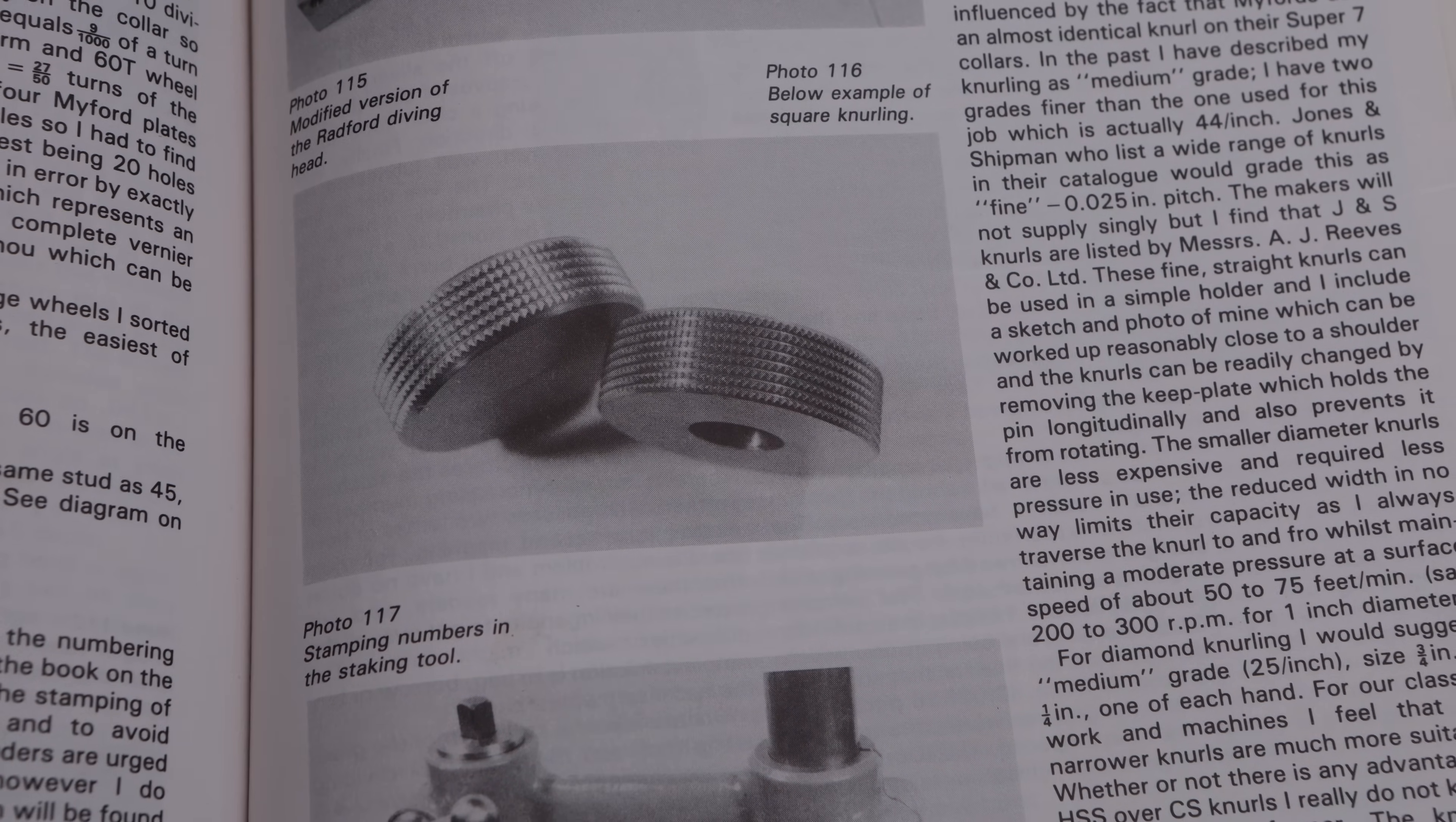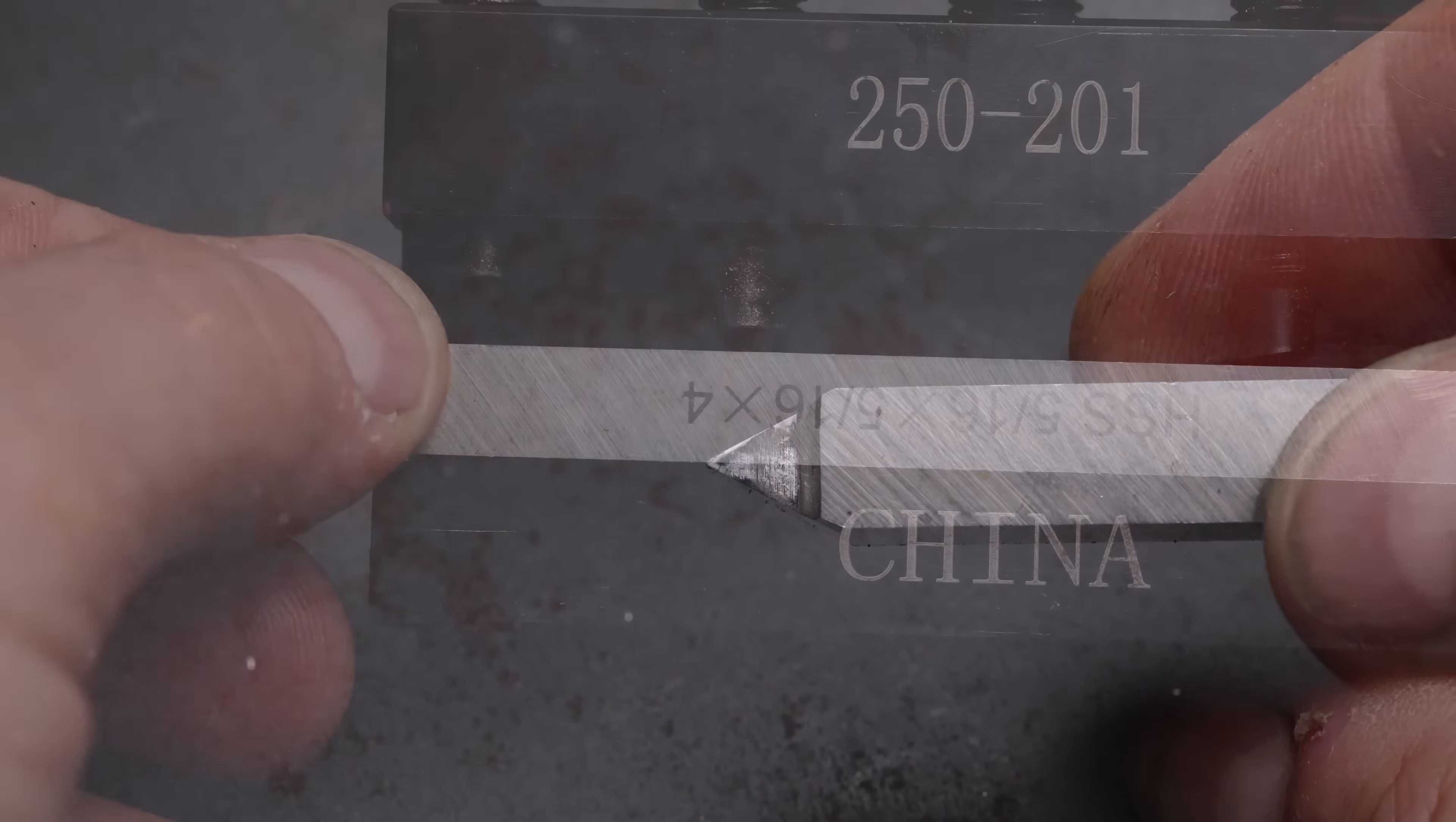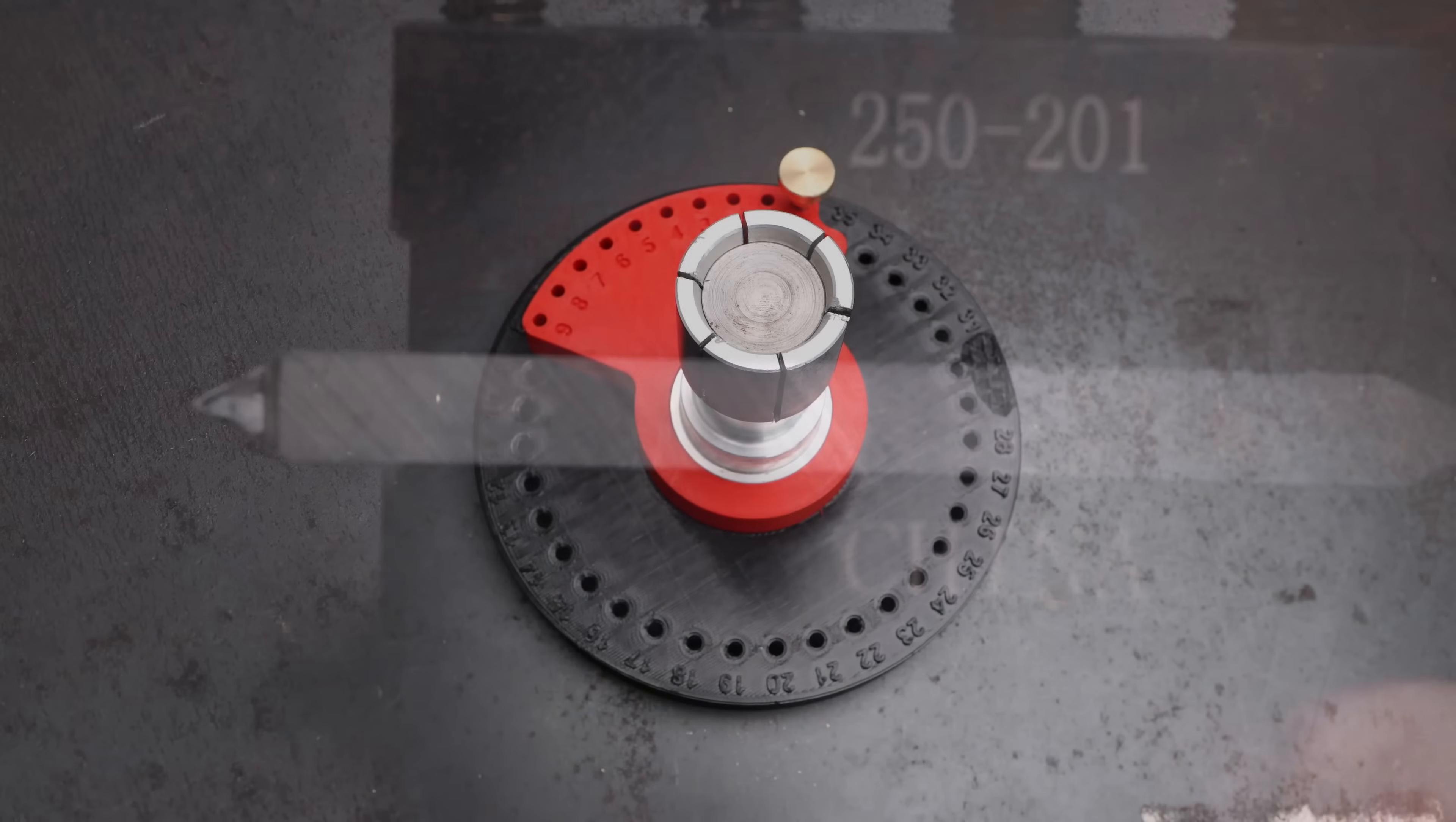Number one I don't have a straight knurl tool. And number two I want a coarser pattern because I've got a larger diameter workpiece. So my plan is to use this tool turned on its side to machine the grooves that go across the part. Then I shall turn the tool around and machine grooves at 90 degrees to these in the circumference of the part.